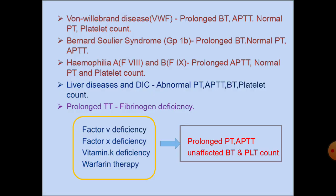Von Willebrand factor mainly helps to facilitate adhesion of platelets to endothelial cells when exposed to an injury, and also helps to stabilize factor 8. As there is deficiency of von Willebrand factor, there is continuous bleeding. In this condition, there is prolonged bleeding time and APTT, with normal PT and platelet count.